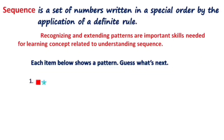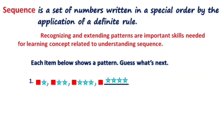For number 1, the first set of pattern has a square and a star. For the second set, a square and 2 stars. For the third set, we have a square and 3 stars. Based on the patterns, there is an increasing number of stars, so you can now guess how many stars are in the next set. If your answer is a square and 4 stars, you are correct.